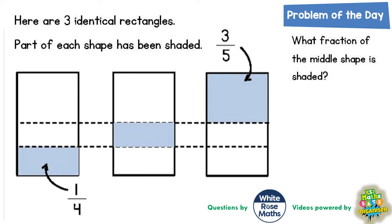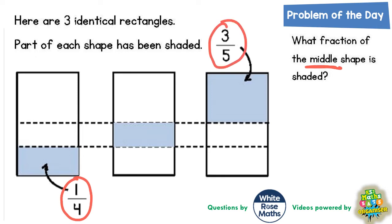Welcome problem solving fans to another problem of the day — this one is all about fractions of a shape. We've got three identical rectangles, part of each has been shaded, and we need to work out what fraction of the middle shape is shaded. We're told the shape on the left has a quarter shaded and the shape on the right has three fifths shaded, and we've got to use that information to find the fraction shaded in the middle.